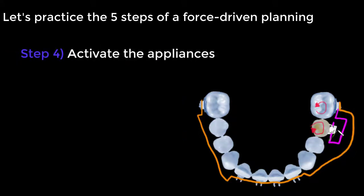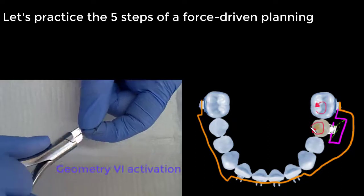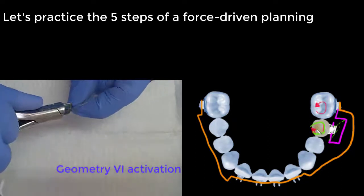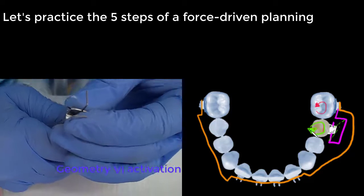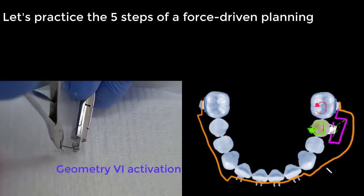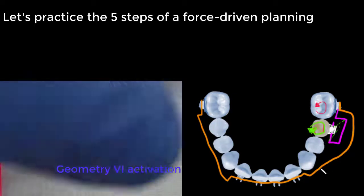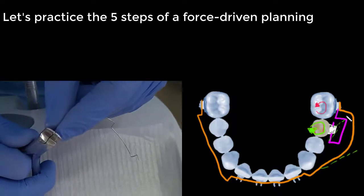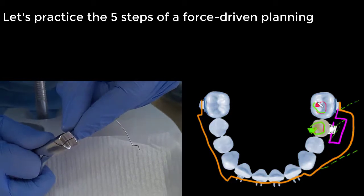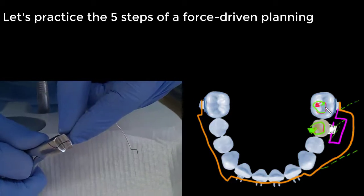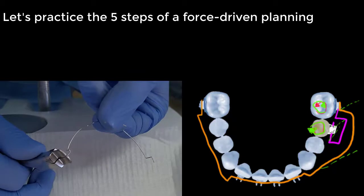In step four, we will perform the activations according to our desired force systems. A geometry six activation in the rectangular loop, we will apply a couple to derotate the premolar.